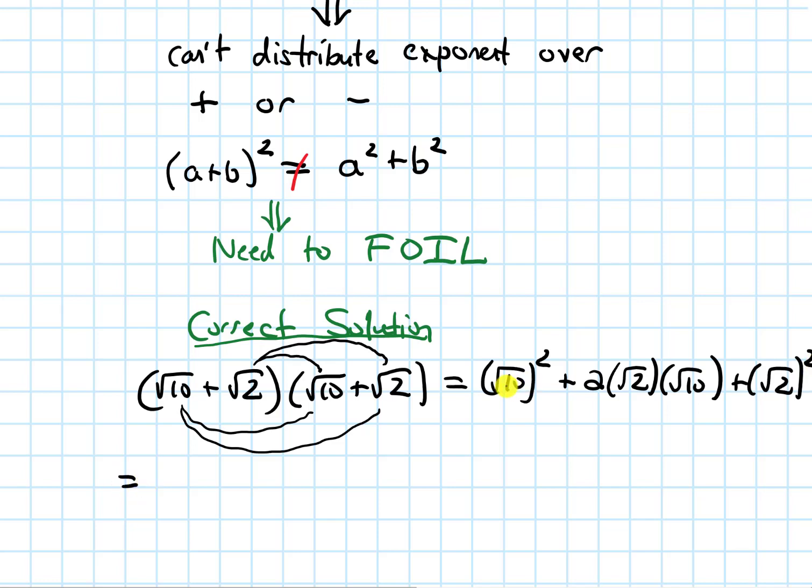And now if I simplify root 10 squared, that's 10. And then I get a plus. And now with 2 root 2 root 10, I can simplify this a little bit because square root of 10 is root of 5 times 2. And then plus root 2 squared is 2.